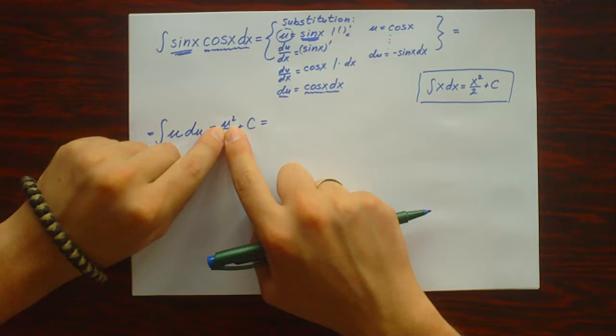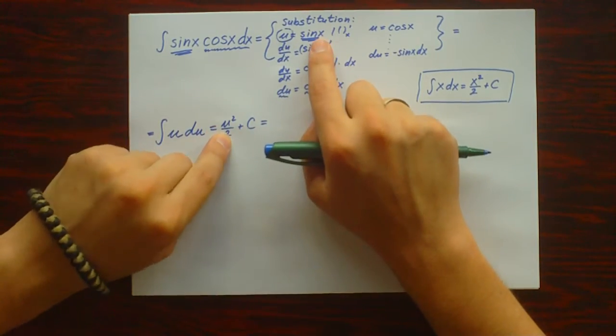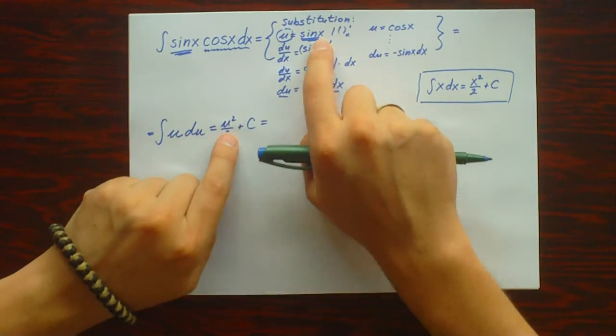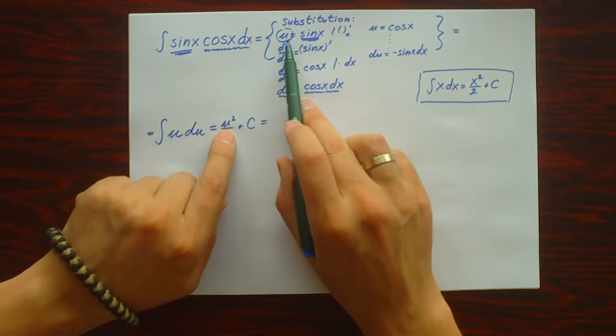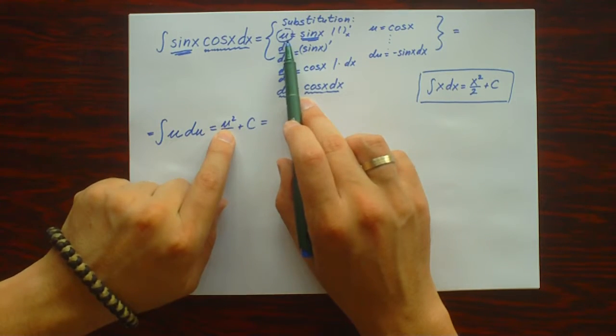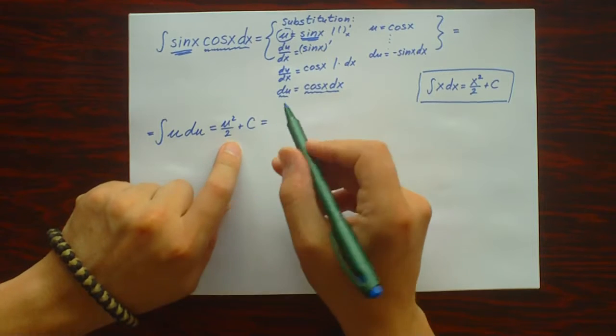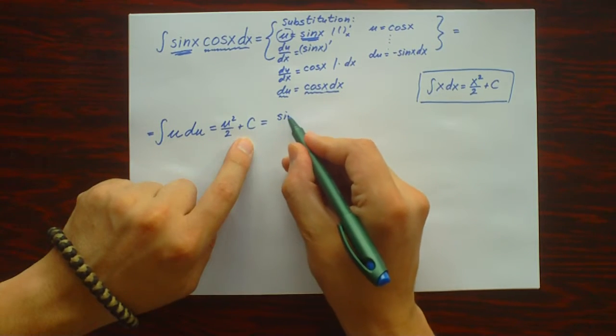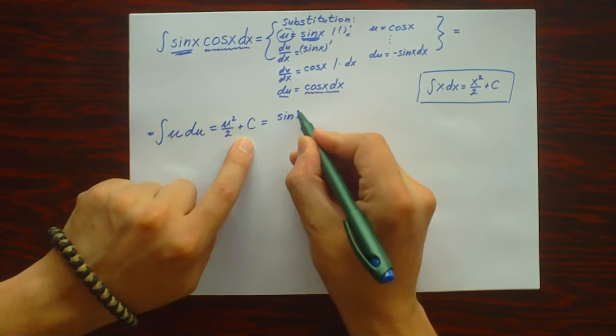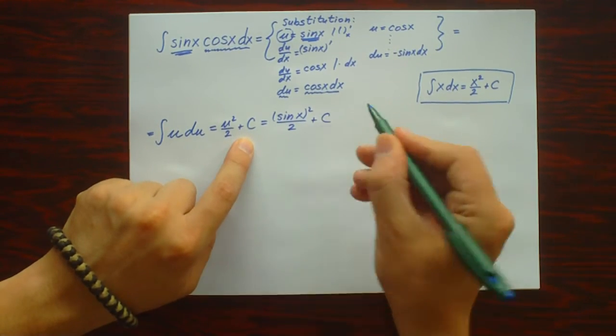And now, because we have the letter u and this is an indefinite integral, we must substitute back. So everywhere we see the letter u, we write sin x. So this is sin squared x over 2 plus C.